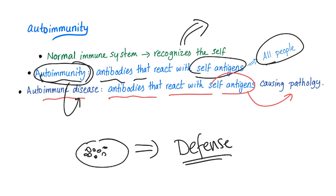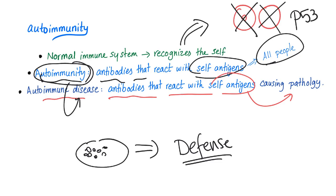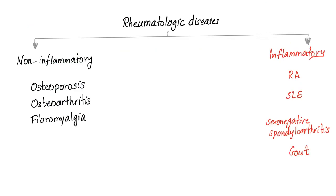Similar to cancer cells — all of us have mutant cells in our body, cells with DNA mutations, but we have a very good system called the tumor suppressor gene, such as P53, that keeps cancer in check and destroys these cells. Cancer happens when everything fails.